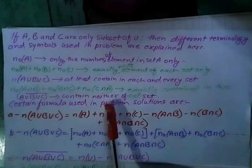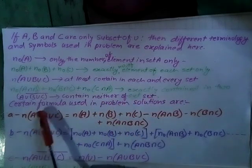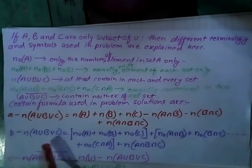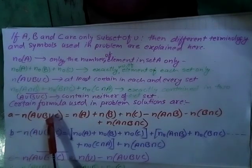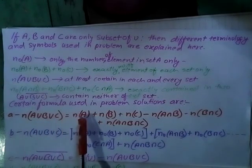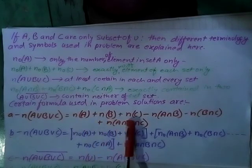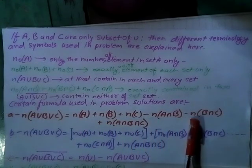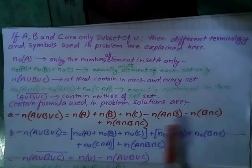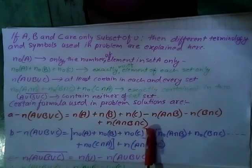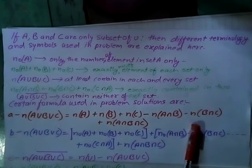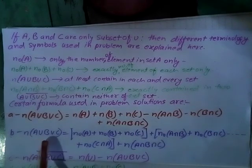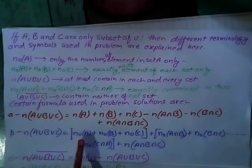The complement of A∪B∪C contains elements in neither of the sets. The formula used in problem solutions: N(A∪B∪C) = N(A) + N(B) + N(C) − N(A∩B) − N(B∩C) − N(C∩A) + N(A∩B∩C).